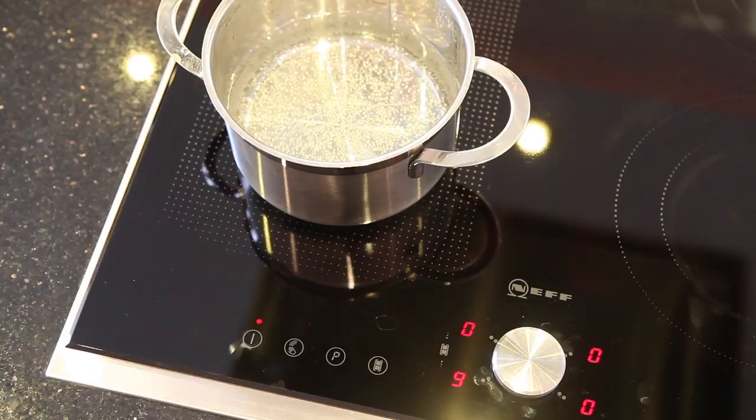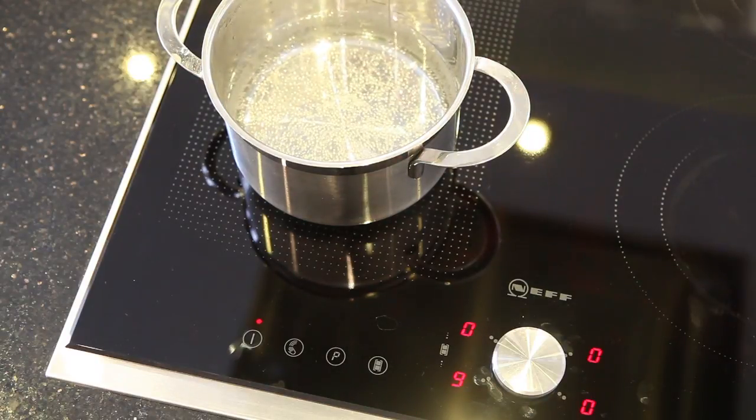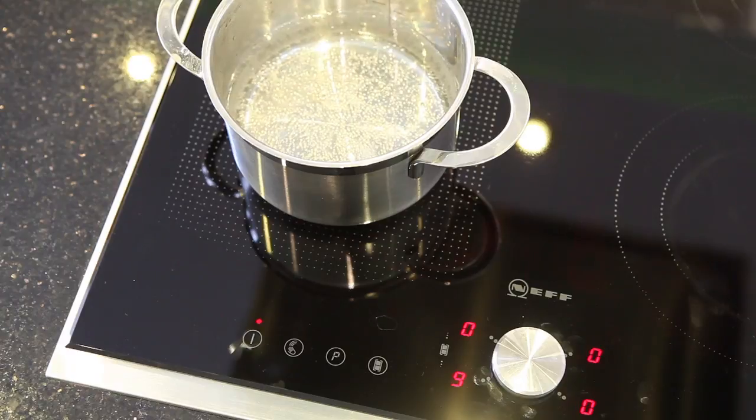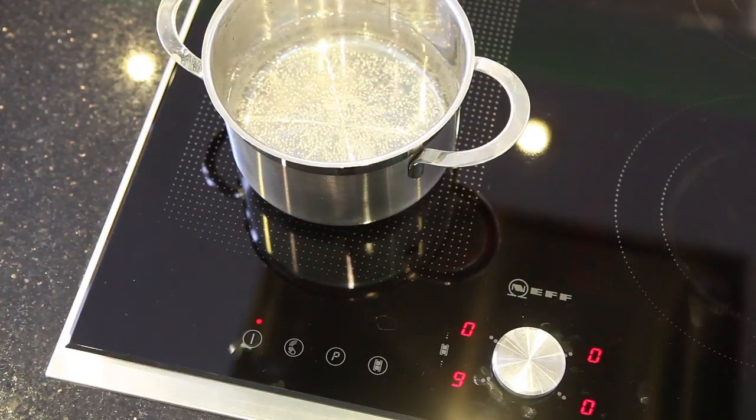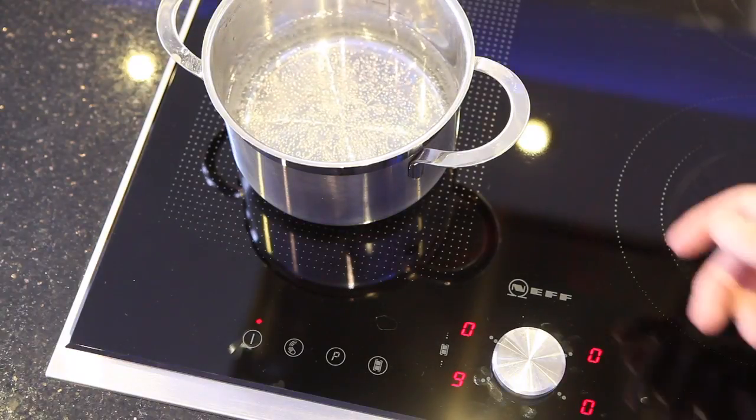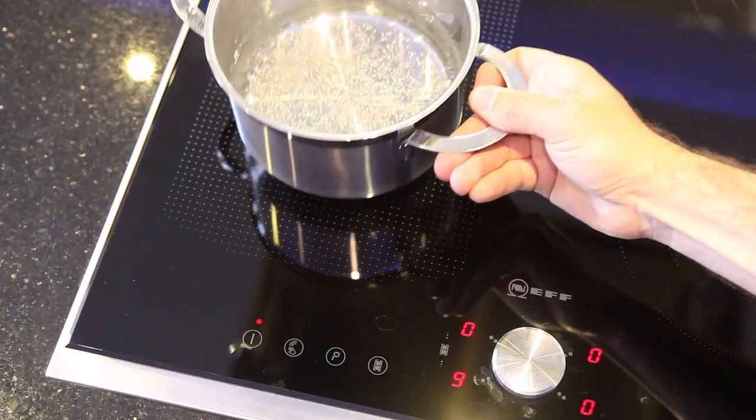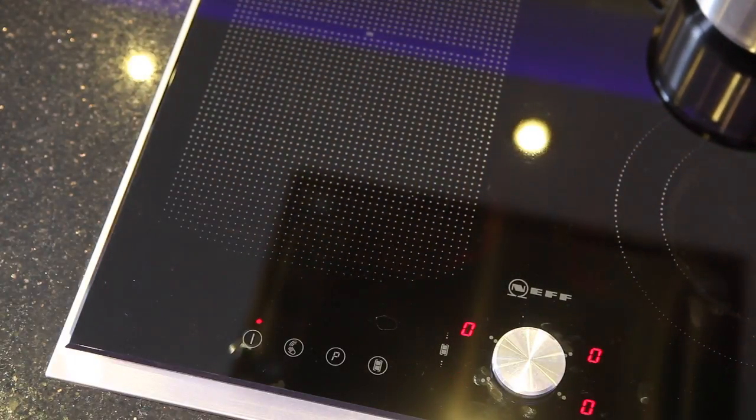In our short demonstration here you can see with the ring set at a maximum of 9 and the water in the pan starting to boil, within seconds of taking the pan from the hob I can place my hand onto the hob without injury. Of course it was very warm but not able to burn from such a simple touch.